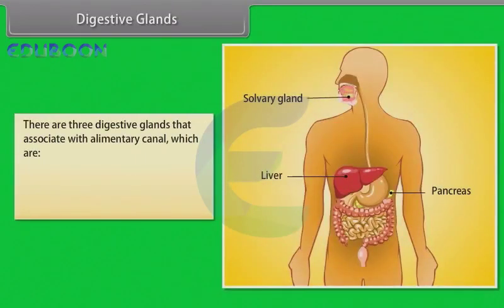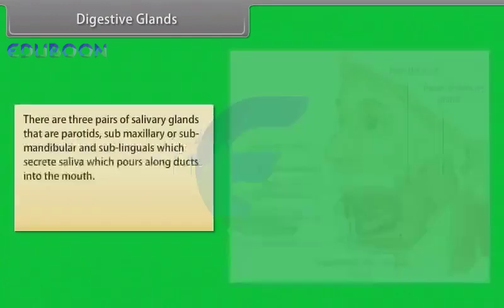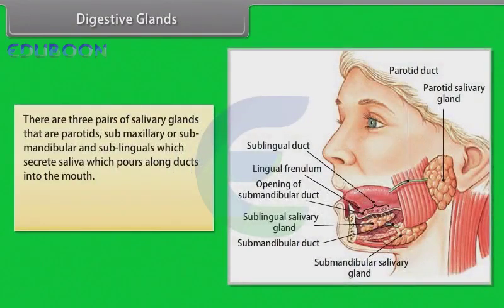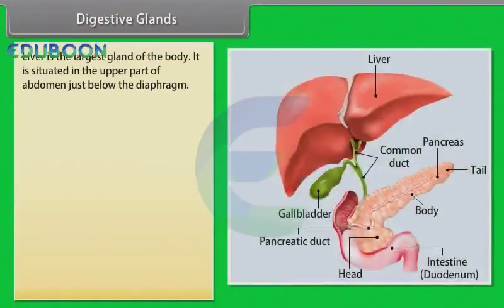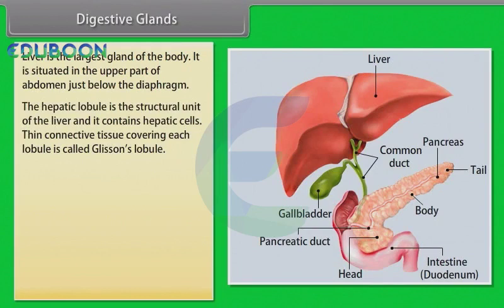There are three digestive glands associated with the alimentary canal: salivary glands, liver, and pancreas. There are three pairs of salivary glands: the parotids, submaxillary or submandibular, and sublinguals, which secrete saliva that pours along ducts into the mouth. Saliva contains the enzyme amylase, which catalyzes the hydrolysis of starch. The liver is the largest gland of the body, situated in the upper part of the abdomen just below the diaphragm. The hepatic lobule is the structural unit of the liver and contains hepatic cells; the thin connective tissue covering each lobule is called Glisson's capsule.